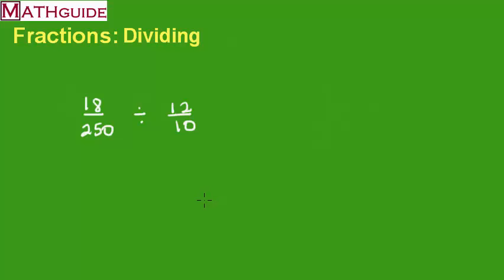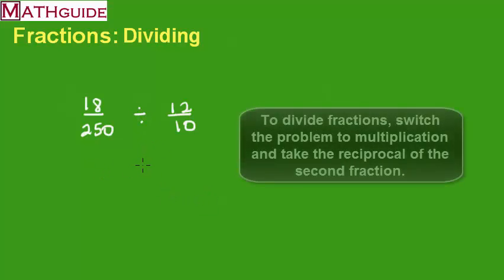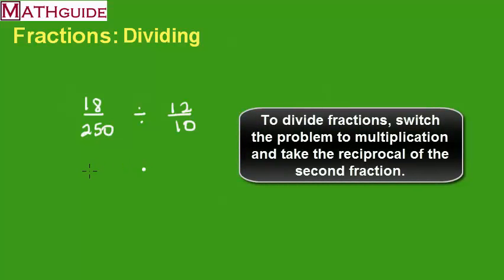All right, so what do we do to solve this problem? Well, we change the problem to multiplication. And we take the reciprocal of the second fraction. So the second fraction gets flipped, so to speak. And the first fraction stays the same.